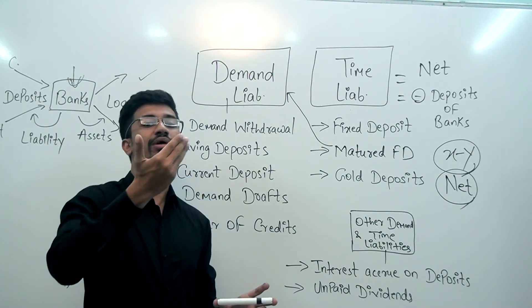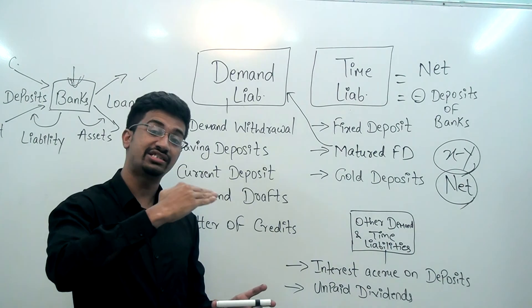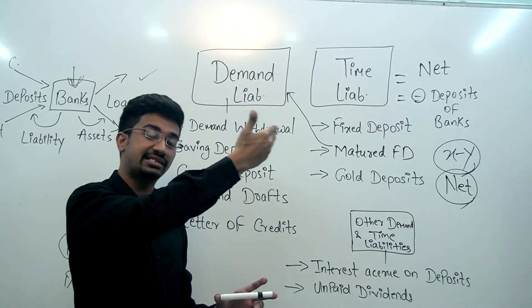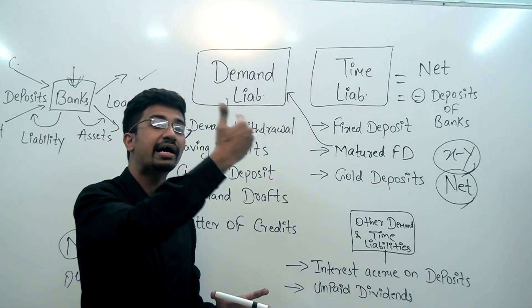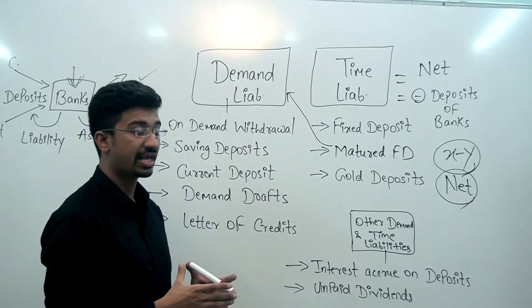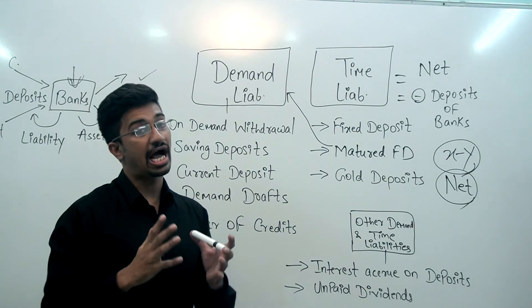तो दोस्तों, इस Net Demand Time Liability को निकालने के बाद में, हम इसके through calculate करते हैं कि 4% पैसा CRR में रखेंगी banks और 20% पैसा SLR में। I hope आपको Net Demand Time Liability अच्छे से समझ आ गई।